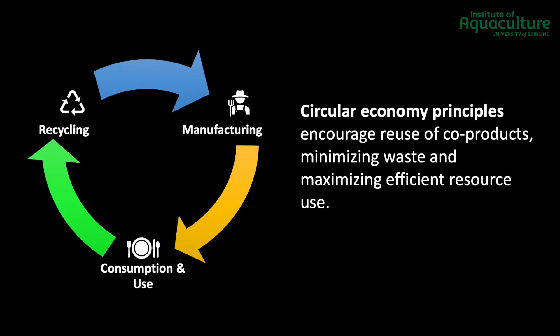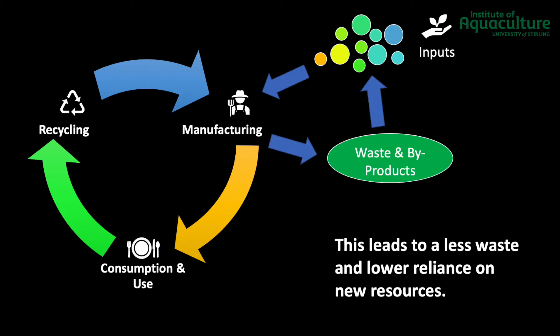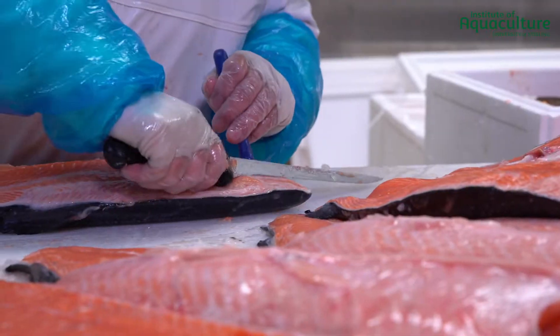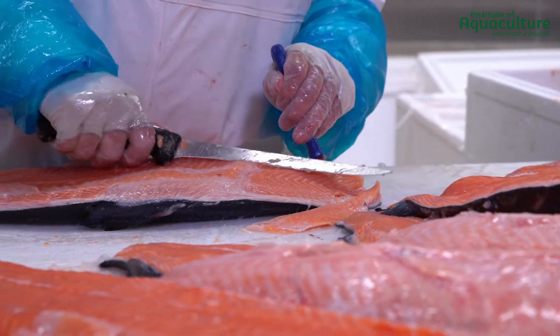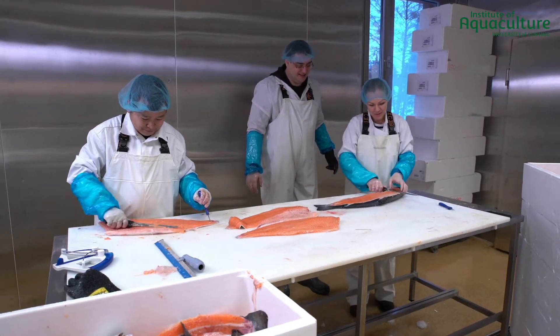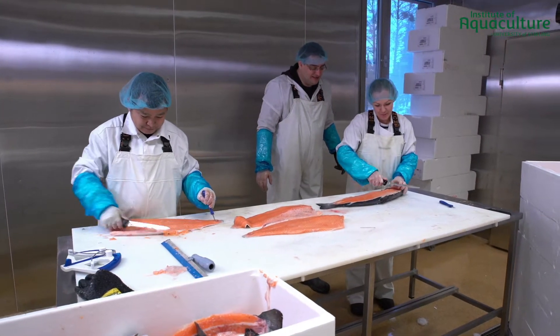In contrast, the circular economy model for food products focuses on the reuse of waste byproducts, such that the value chain outputs become inputs for other value chains. For example, fish processing produces fillets as well as leftover scraps, skins, and trimmings of fish. These scraps can then be used as ingredients in pet feed.